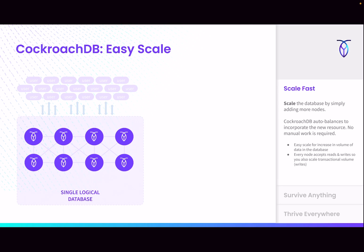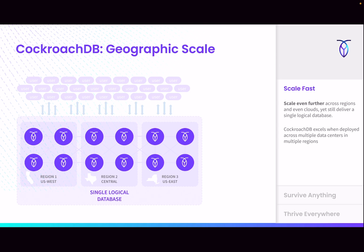Scale for Cockroach is fairly simple and straightforward. You simply spin up a node, point it at the cluster, and the cluster instantly expands. You've expanded both the volume of data you can have, and since every node in CockroachDB can accept reads and writes, you've also scaled out reads and writes as well. And we can scale even further — across multiple different regions.